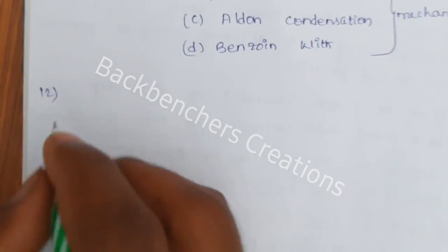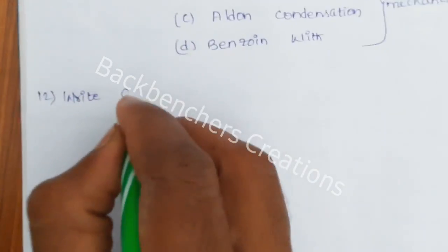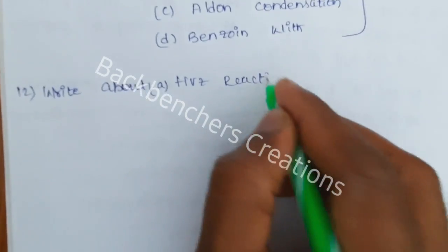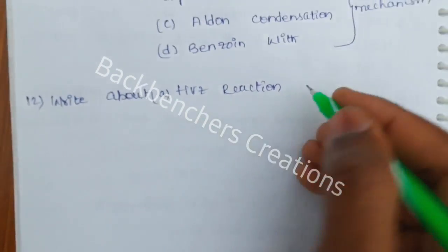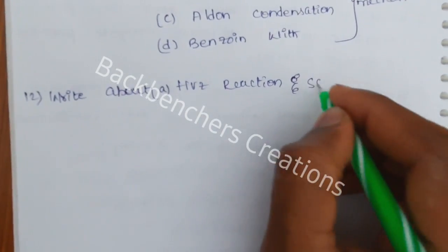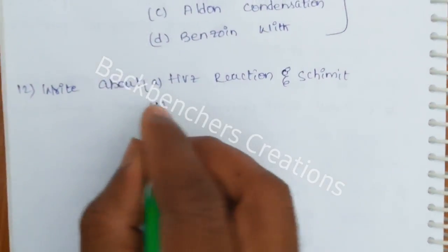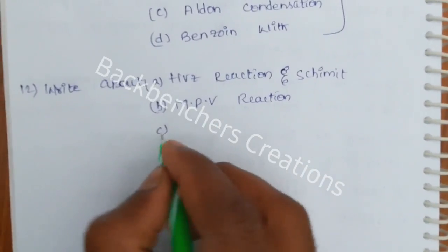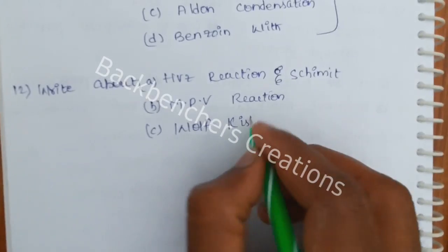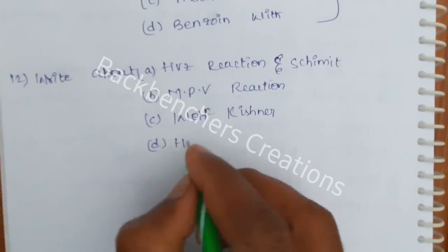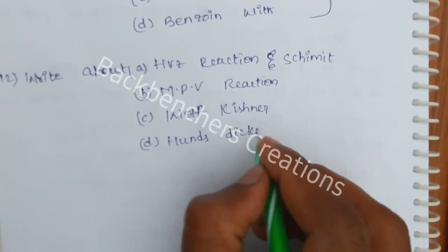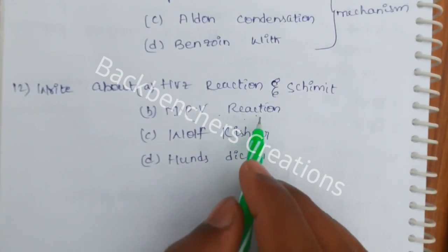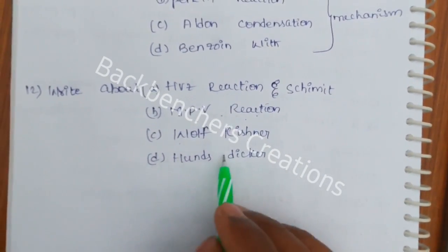Twelfth question: Write about (a) HVZ reaction, (b) Clemmensen reduction, (c) Wolf-Kishner reduction, and (d) MPV reaction and Dieckmann condensation.